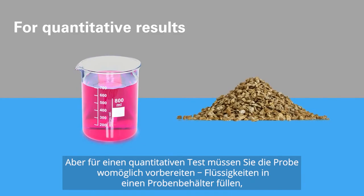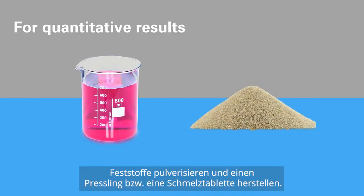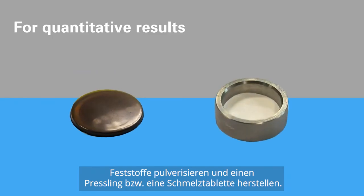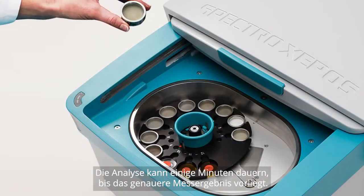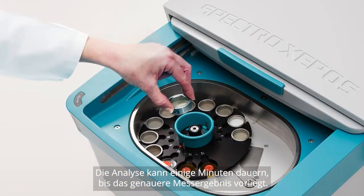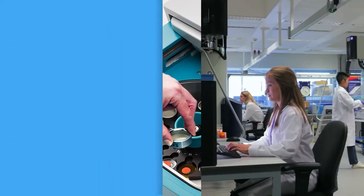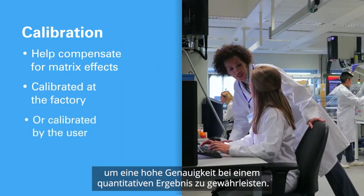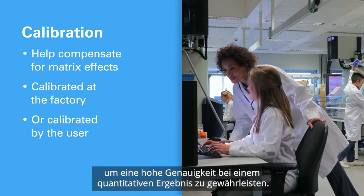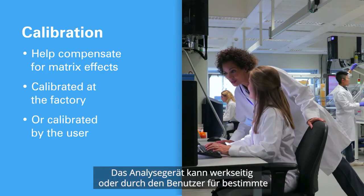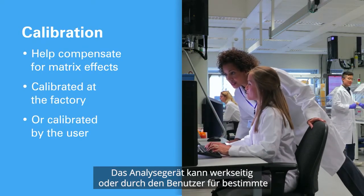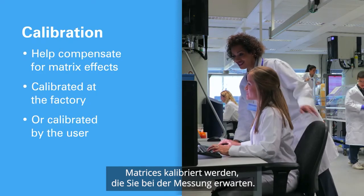But for a quantitative test, you may have to prepare the sample: fill liquids into a sample cup, pulverize solids and make a pressed pellet, or fused bead. Analysis may take a few minutes for this more accurate result. Correct calibration is also critical to ensure high accuracy in a quantitative result.